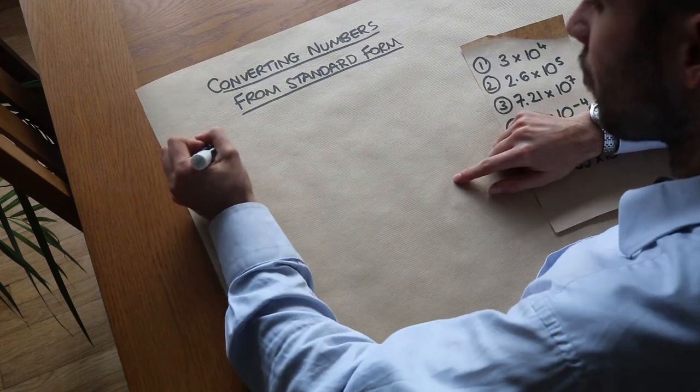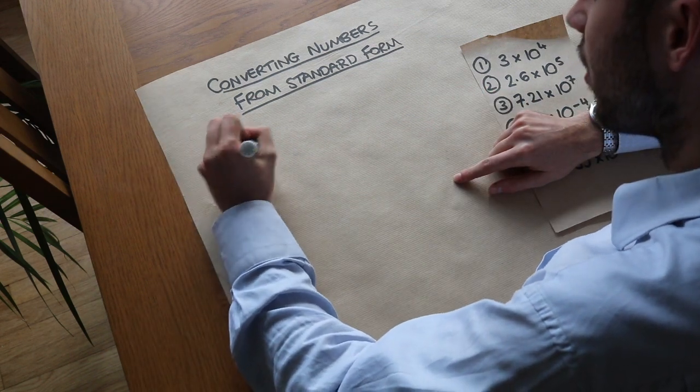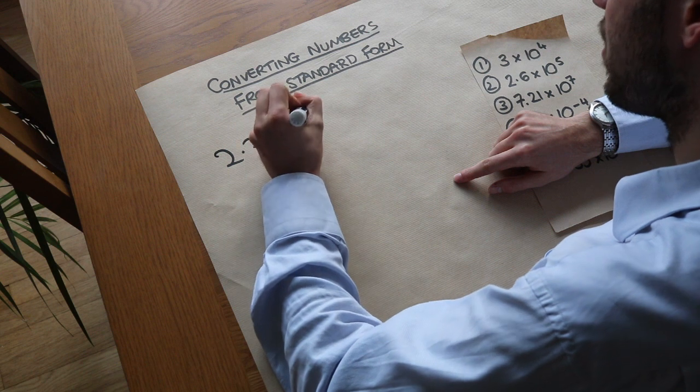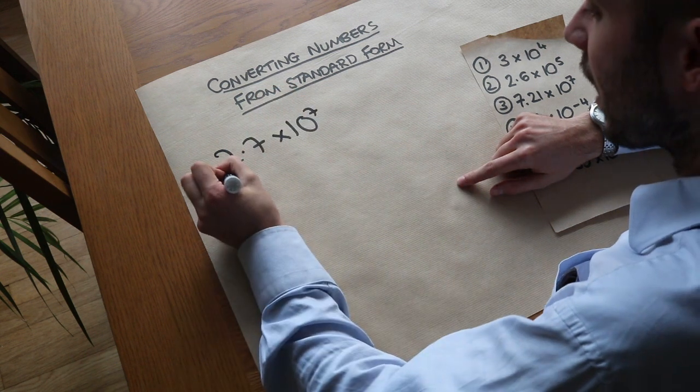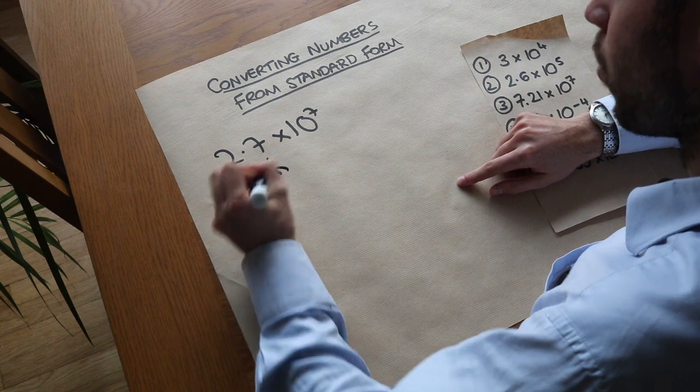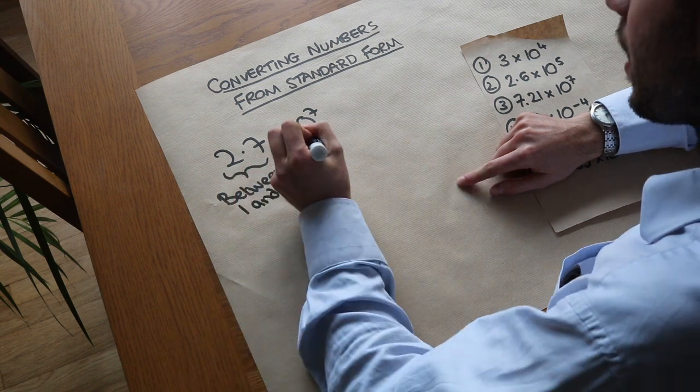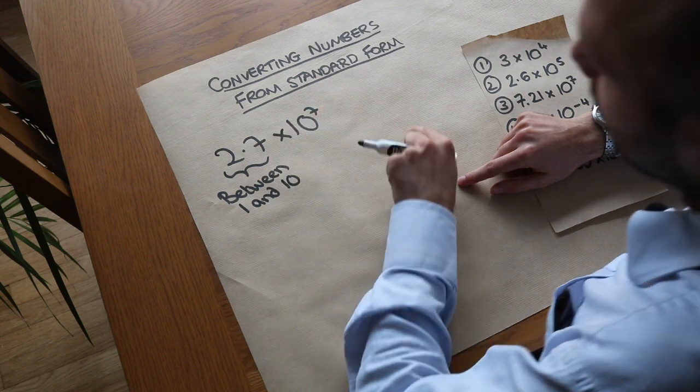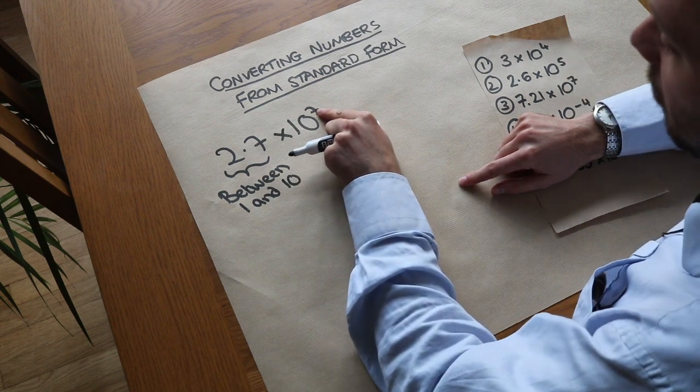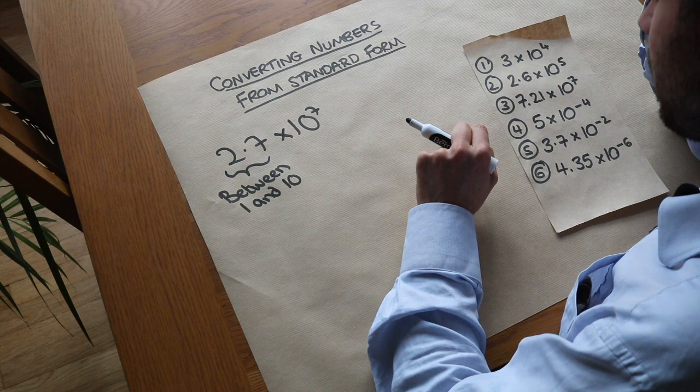So for example we could write say 2.7 times 10 to the power of 7. You remember that in standard form this number had to be between 1 and 10, exclusive of 10 but including 1, and this was always the form 10 to the power of something. This could either be a positive or a negative integer.